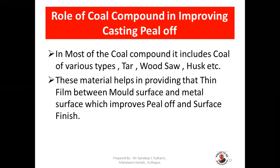Role of coal compound in improving casting fill-off: In most coal compounds, it includes coal of various types — tar, wood, saw, husk, etc. This material helps in providing a thin film between the metal surface and mold surface, which improves the fill-off of the casting and surface finish as well.